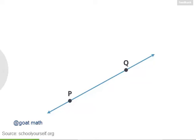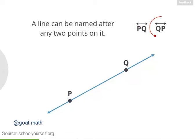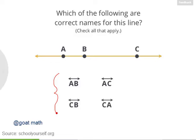Next, let's talk about how lines are named. A line can be named after any two points on it. So you could call this line PQ, and to show it's a line, you'd write a line symbol on top of the two letters with arrowheads to show it goes on forever in both directions. Another name for this line is QP — with lines, the order of the points in the name does not matter. So take a look at this line with points A, B, and C. Which of these are correct names for this line?